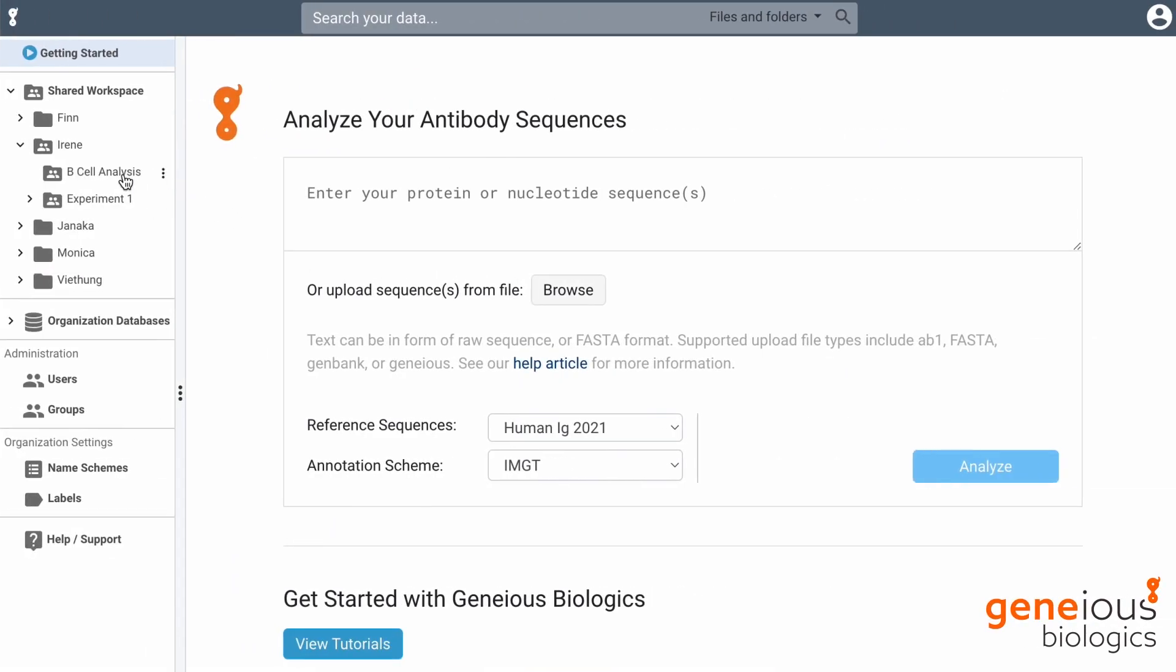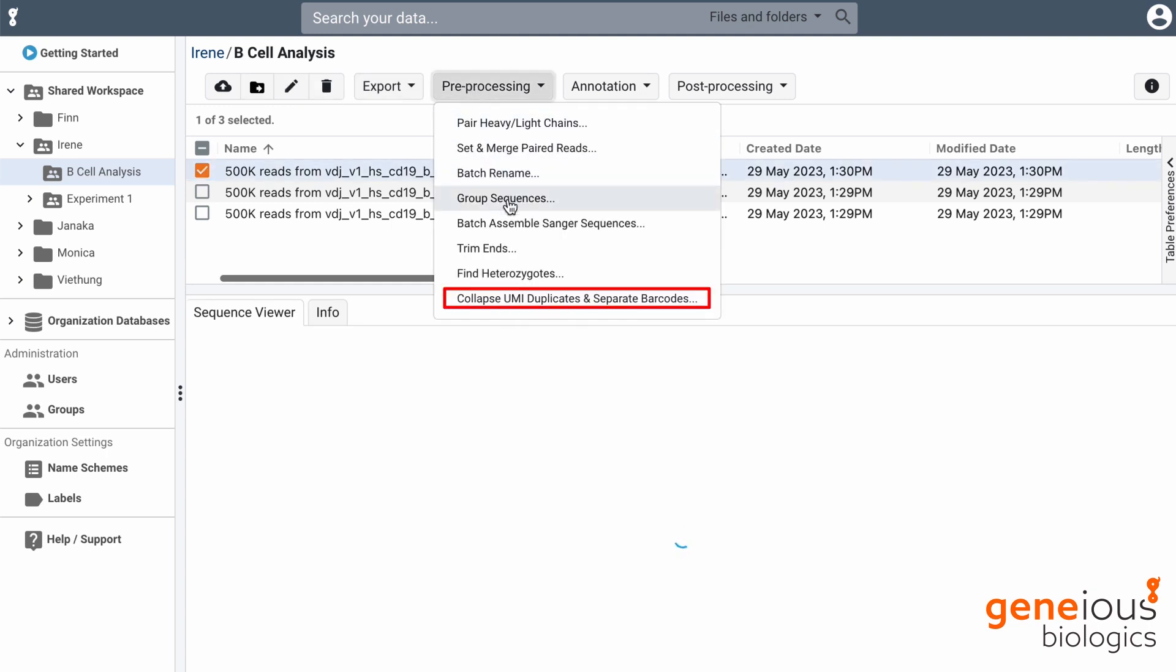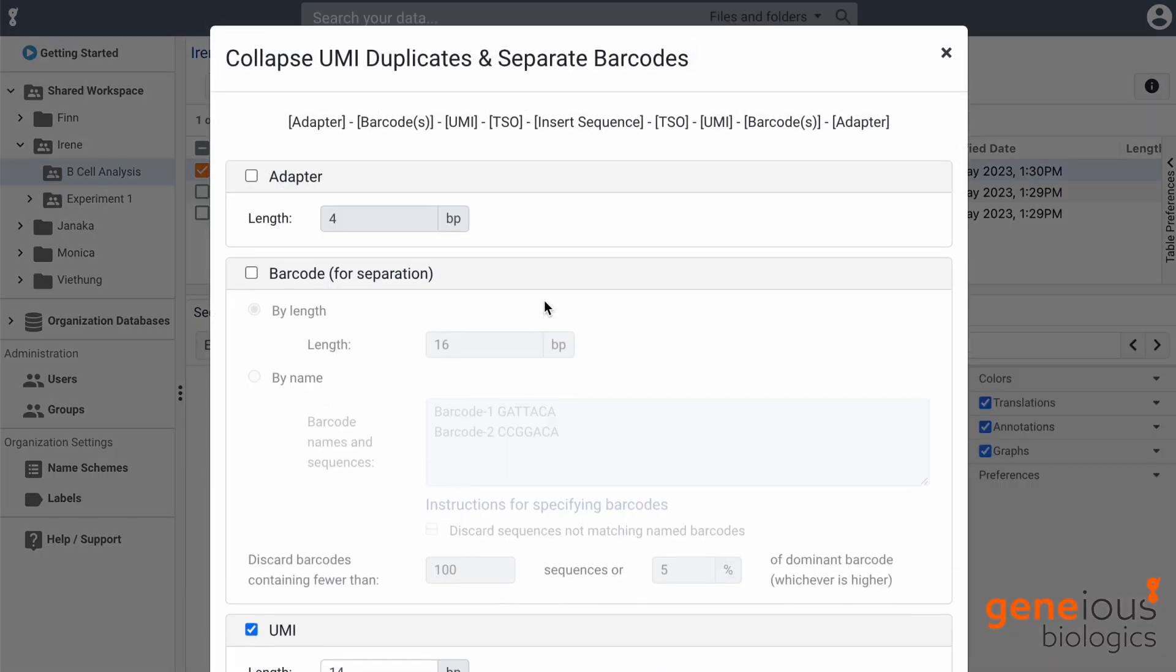The separate barcodes and collapse UMIs operation in Genius Biologics allows you to group and collapse your sequences based on the barcodes and UMIs for enhanced analyses of antibody sequence data.